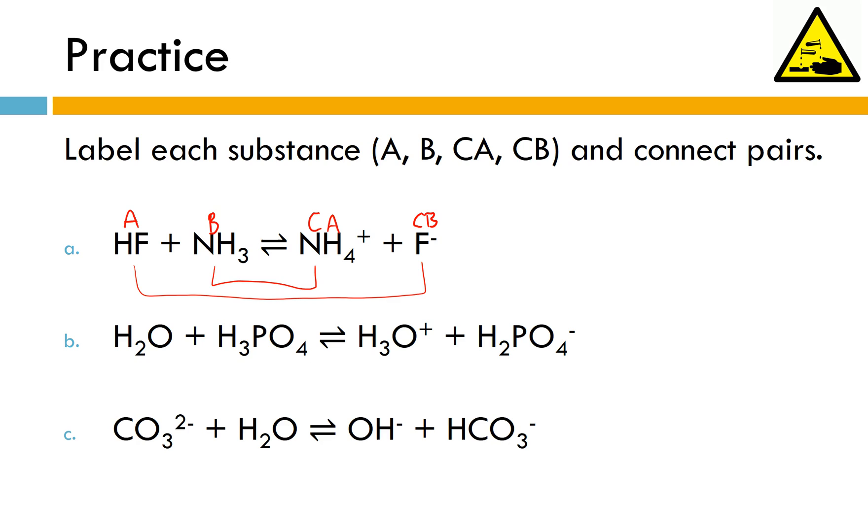All right. So go through. See if you can take care of B and C on your own. Check your work for letters B and C. Make sure that you've got them labeled correctly. So for B it's base, acid, conjugate acid, conjugate base. Pair up appropriately. And for C it's base, acid, conjugate base, conjugate acid. Same deal. Pair them up appropriately.